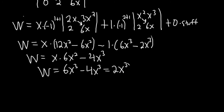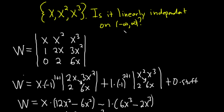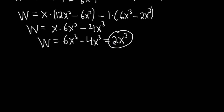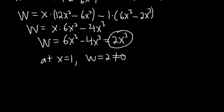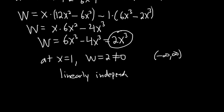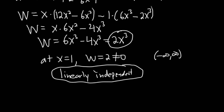So the Wronskian is 2x cubed. The question was: is this set of functions linearly independent on the interval negative infinity to infinity? There is a theorem that says if the Wronskian is non-zero for at least one point in the interval, the set is linearly independent on that interval. For example, at x equals 1, the Wronskian equals 2, which is non-zero. Therefore it's linearly independent on the entire interval.